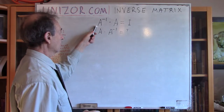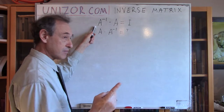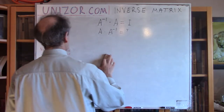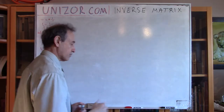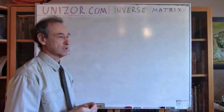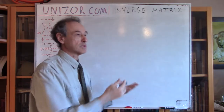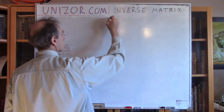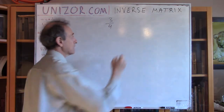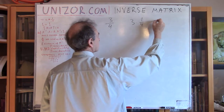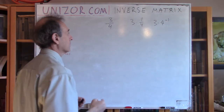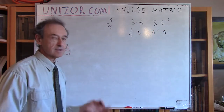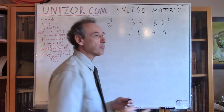A square matrix has an inverse only if there exists another matrix of the same square dimension, n by n, with the required property. Now, why did we introduce the inverse matrix to talk about division? As an analogy with numbers: 3 quarters is basically 3 times 1 fourth, or 3 times 4 to the minus 1. Interestingly, 1 fourth times 3 is exactly the same number because multiplication of numbers is commutative.